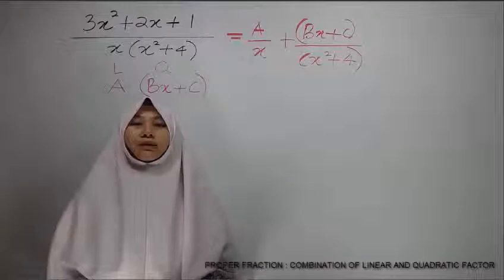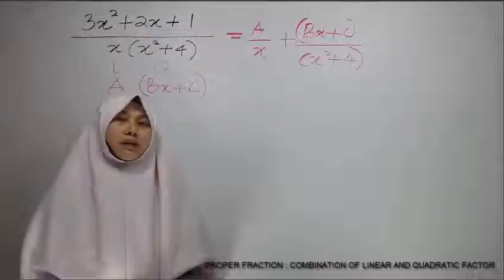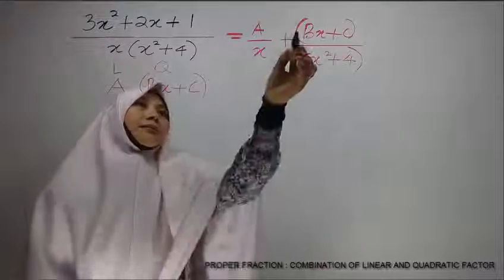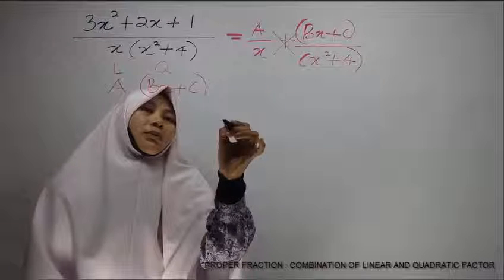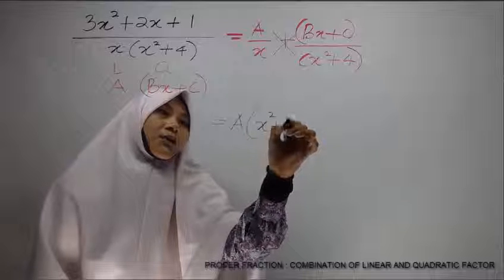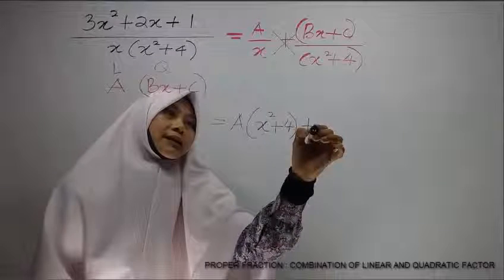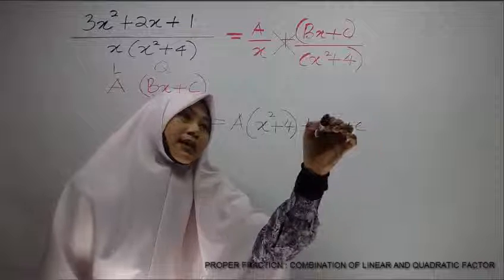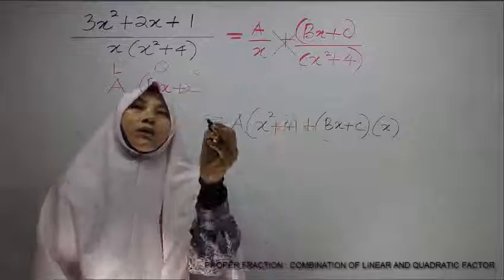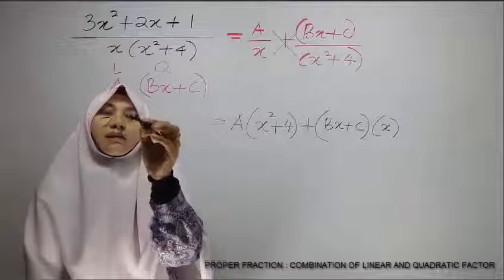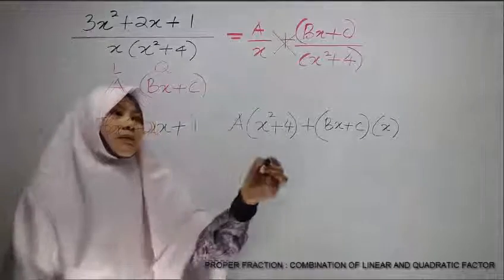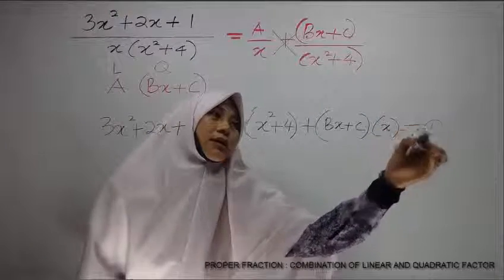Next, we want to construct an equation. Just apply cross multiplication. So we will have A times x squared plus 4 plus Bx plus C times x, and equal to numerator of the question. Now, this will be our equation 1.